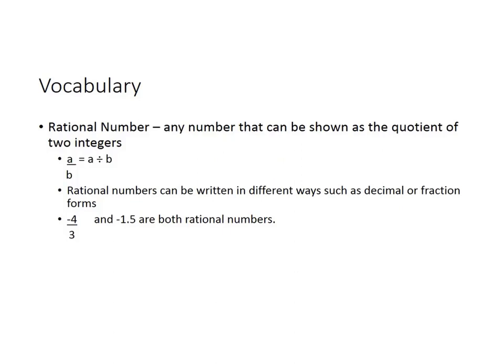Let's go through some vocabulary first. A rational number is any number that can be shown as the quotient of two integers. Basically, a rational number is anything you can get as an answer when you do a division problem. So rational numbers can be written in different ways, such as decimal or fraction form. Negative 4 over 3 and negative 1 and a half are both examples of rational numbers.